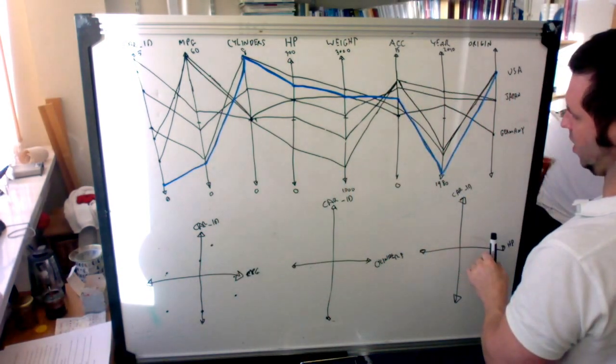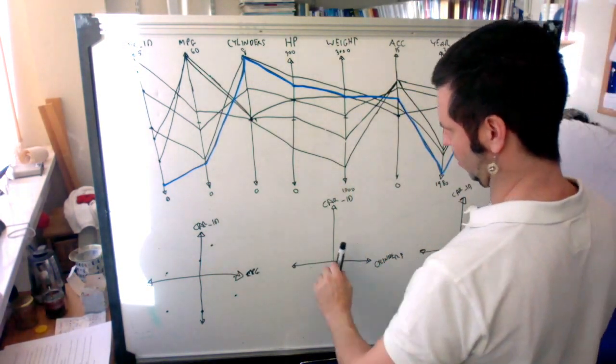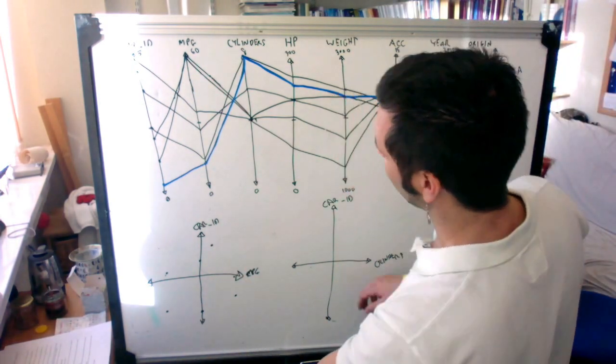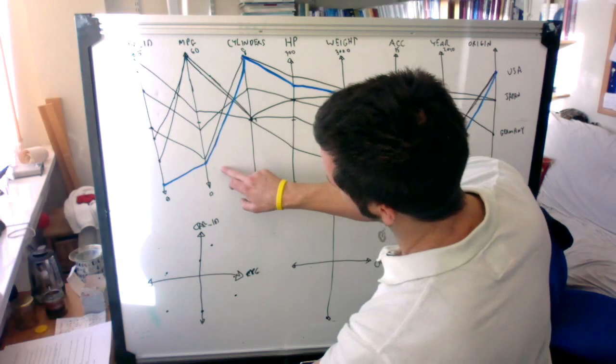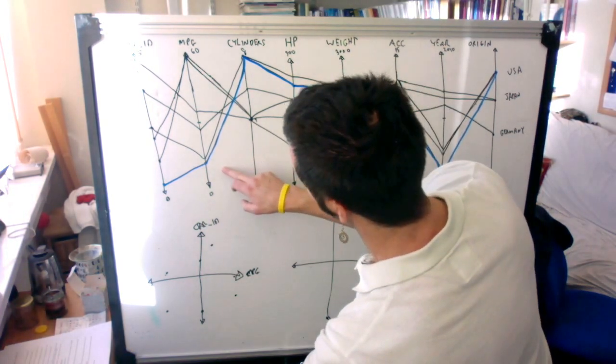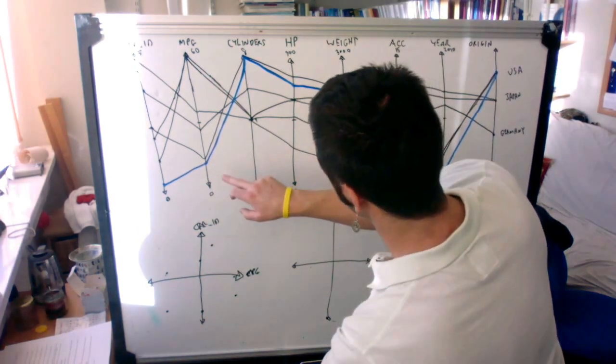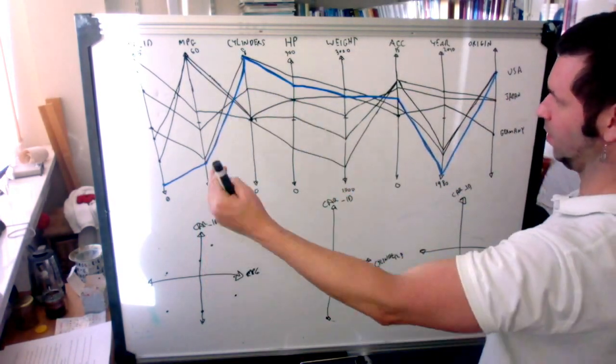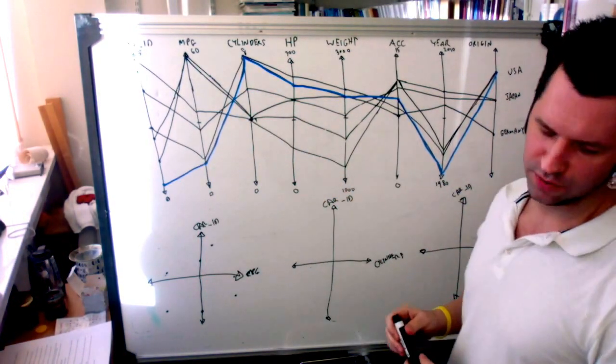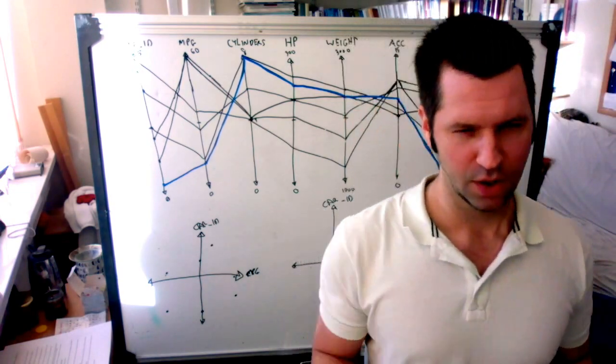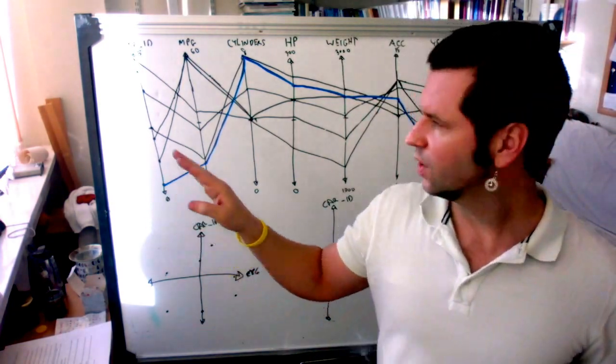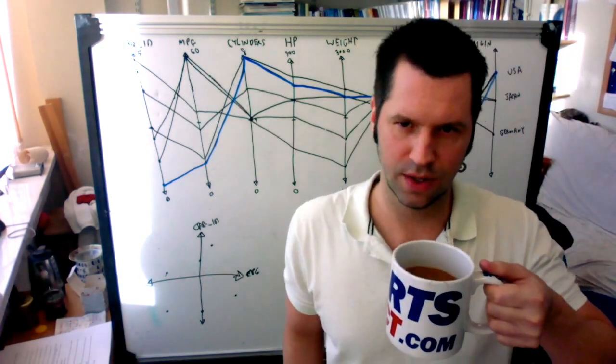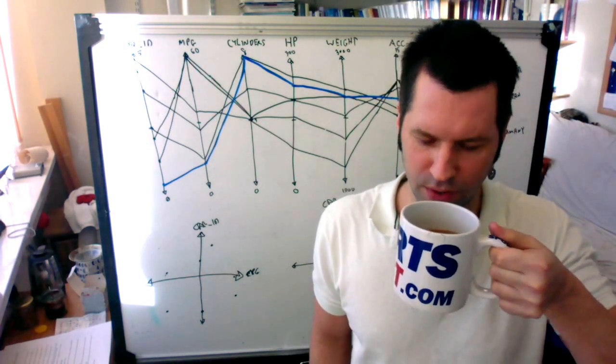So here we can have all the car IDs along one row. The next row in the matrix going down would be miles per gallon. So all the combinations of miles per gallon with car ID, cylinders, horsepower, weight, until we have a complete matrix of all the combinations. So it is possible to represent the same information in the parallel coordinates as with a scatter plot matrix.